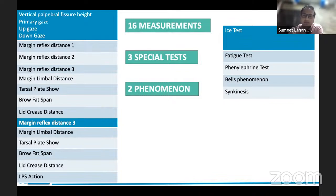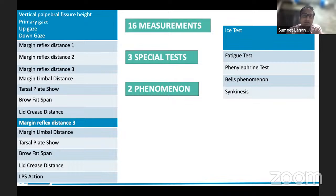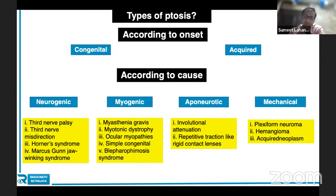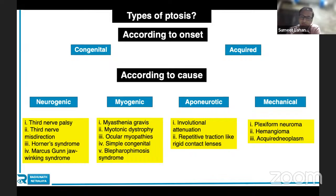Now I'll go through frequently asked questions for the ptosis case — not covering very detailed fellowship-level questions, but what is expected from postgraduates. An important FAQ is the classification of ptosis: it can be divided by onset — congenital or acquired — or by cause — neurogenic, myogenic, aponeurotic, and mechanical. Most common is aponeurotic, which could be involutional or due to repetitive traction like rigid contact lens use, causing aponeurotic ptosis. This is followed by myogenic, which includes myasthenia gravis, muscular dystrophies, myopathies, congenital causes, or blepharophimosis syndrome.